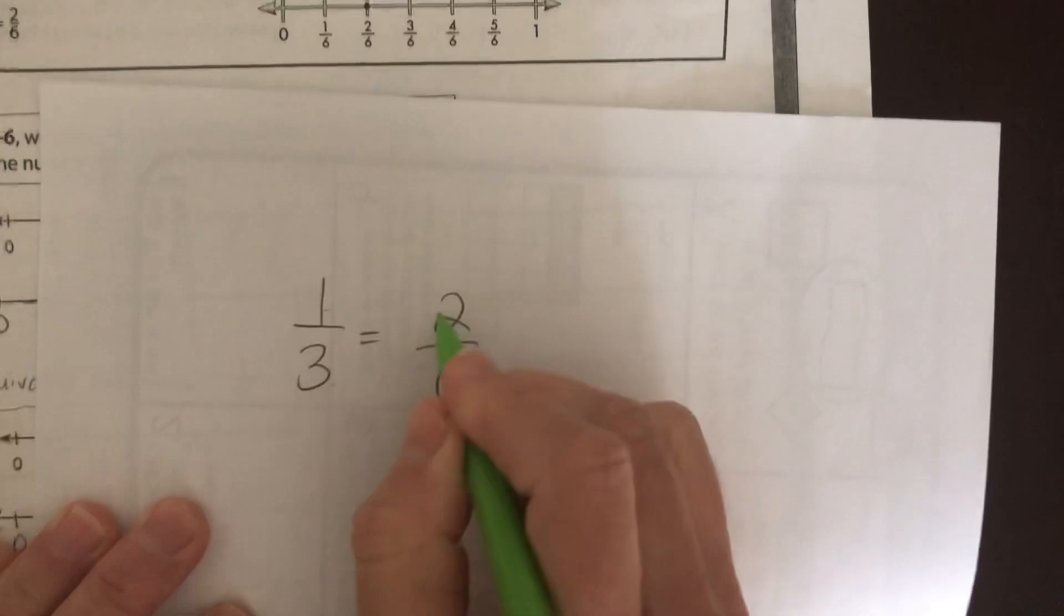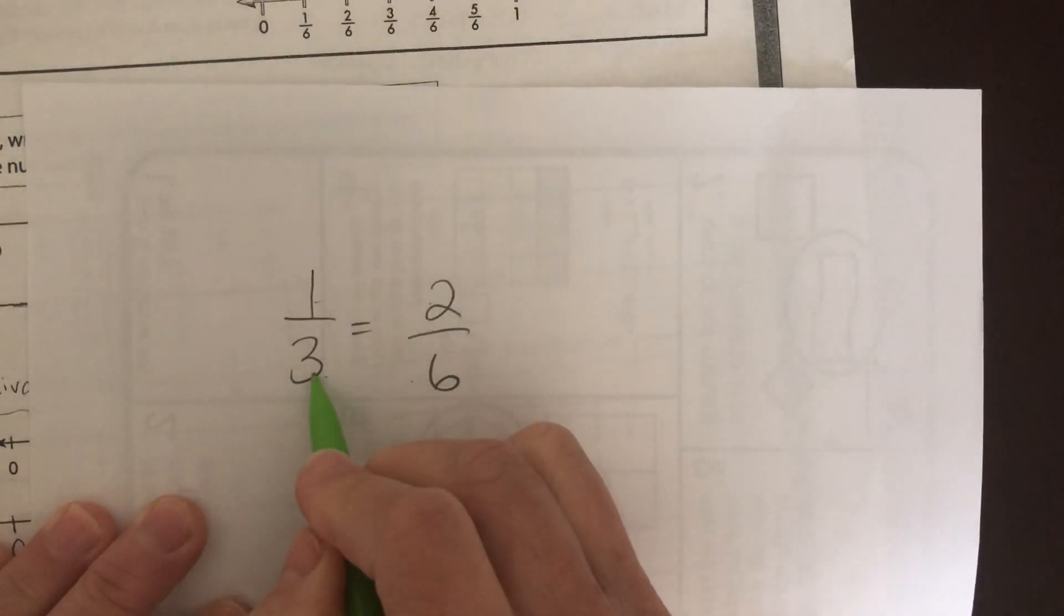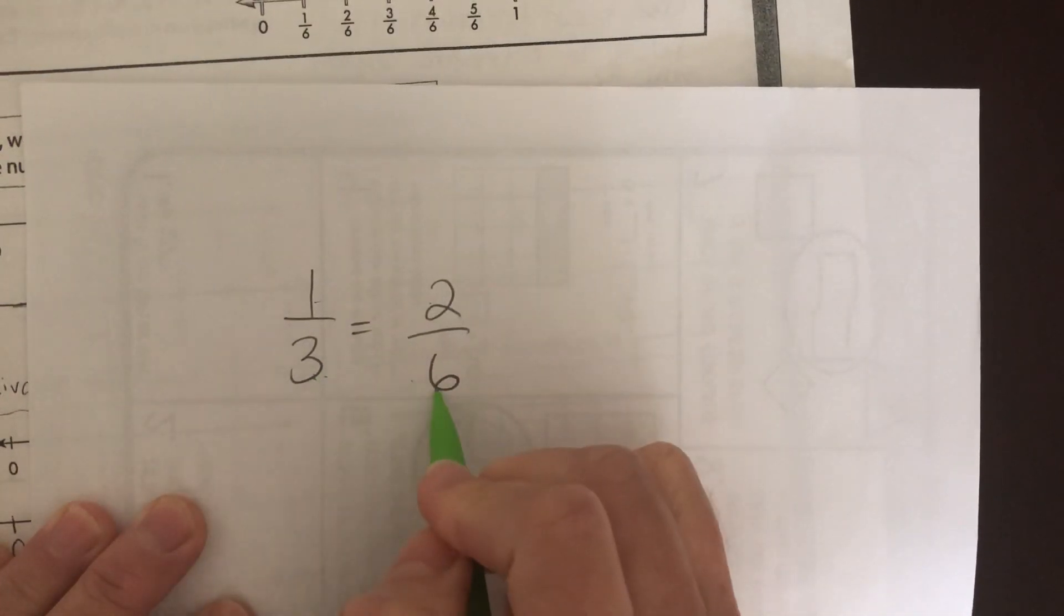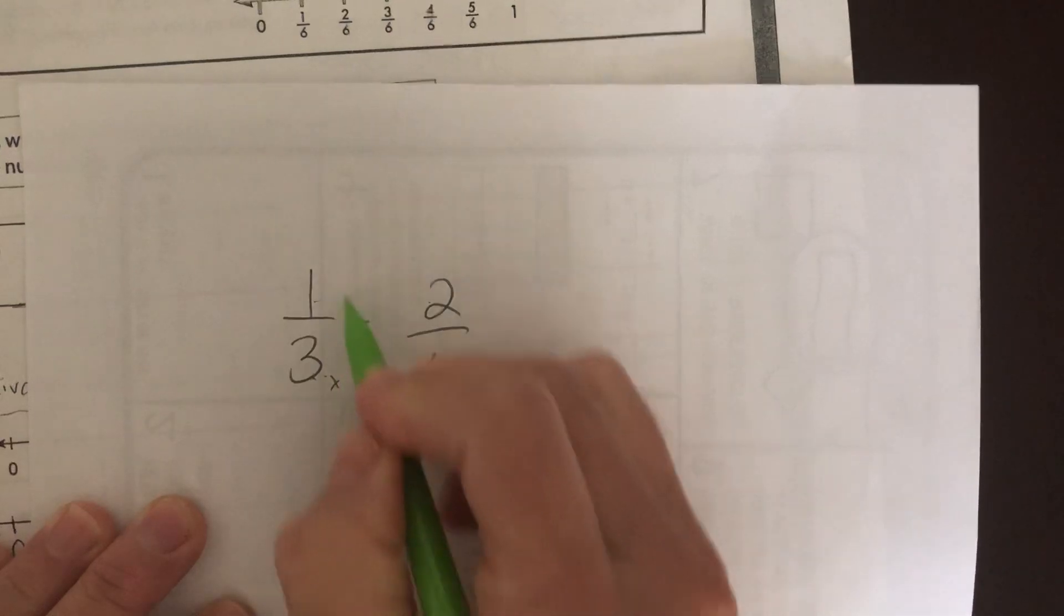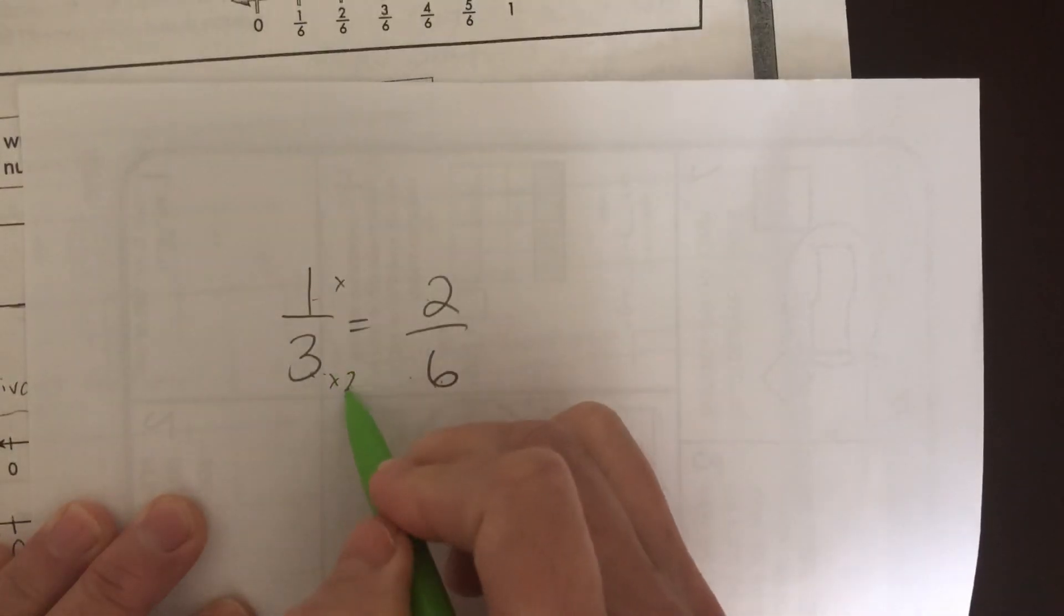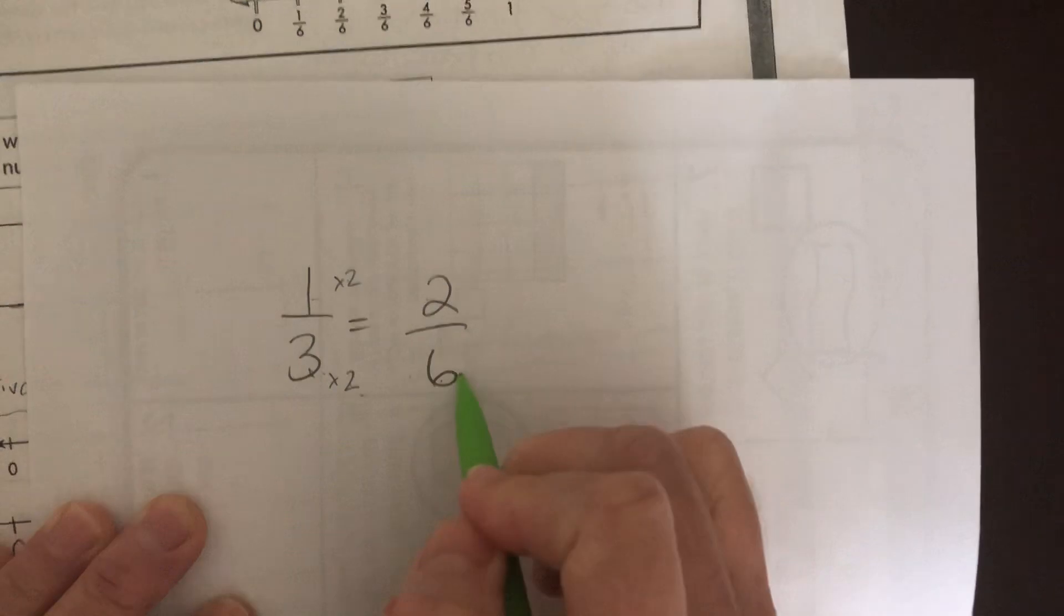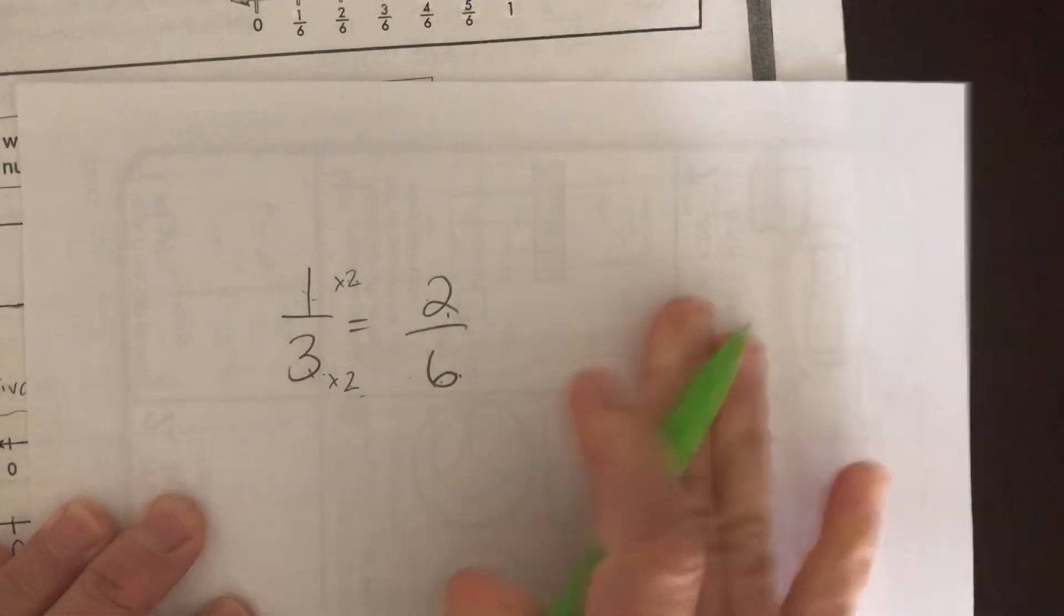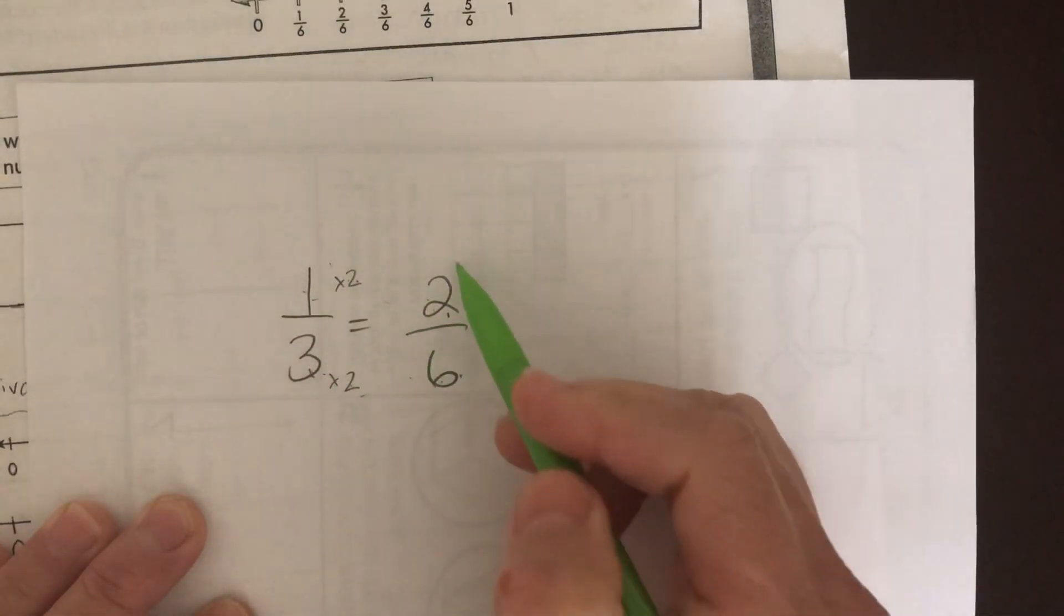What we do to one side, we must do to the other side. So what do you multiply times 3 to make it be a 6? What should that be? 3 times what is 6? How many 3s make a 6? 2, right? So if you're multiplying the top by 2 also, 3 times 2 is 6, 1 times 2 is... I'm sorry, 1 times 2 is 2.